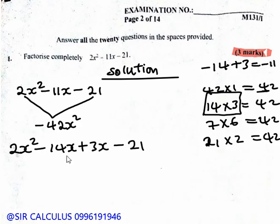So now we factor by grouping. From 2x squared minus 14x, we take out 2x. 2x times x gives 2x squared. Minus 14x divided by 2x gives 7. Then we do the same. From 3x minus 21, we take out 3.